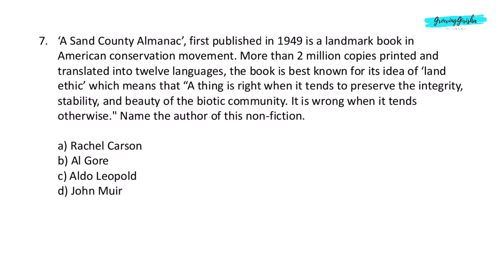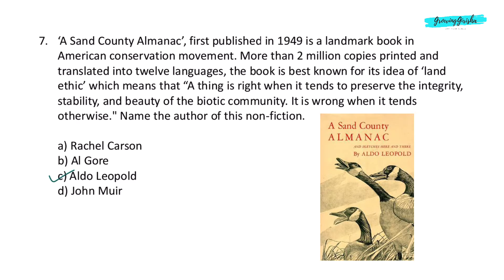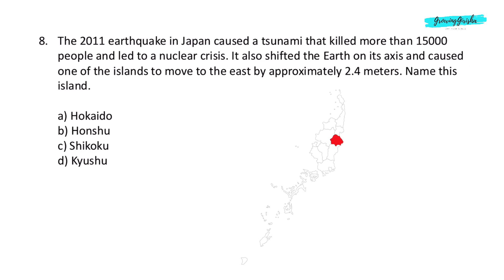Question 7. A Sand County Almanac, first published in 1949, is a landmark book in the American conservation movement. More than 2 million copies printed and translated into 12 languages, the book is best known for its idea of Land Ethic: 'A thing is right when it tends to preserve the integrity, stability and beauty of the biotic community. It is wrong when it tends otherwise.' Name the author of this non-fiction. Option C: Aldo Leopold.